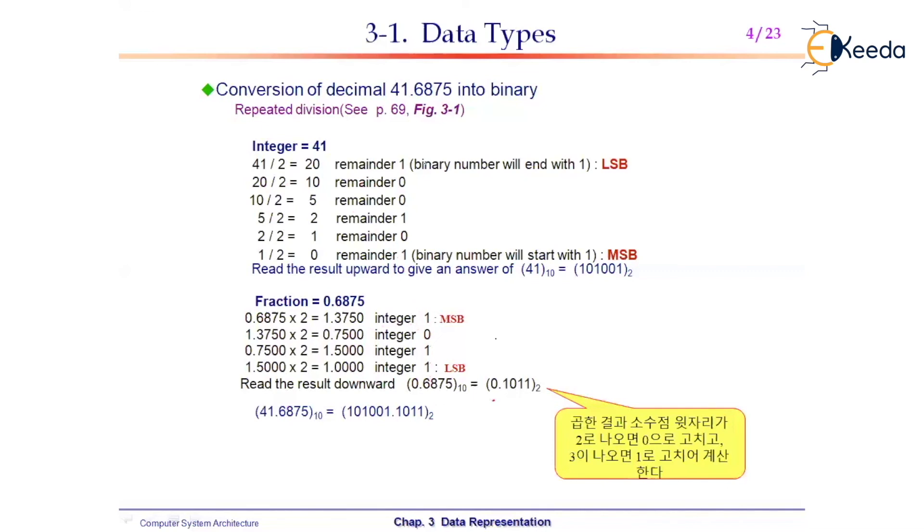For the integer part, we arranged remainders in inverse order to convert from decimal to binary.